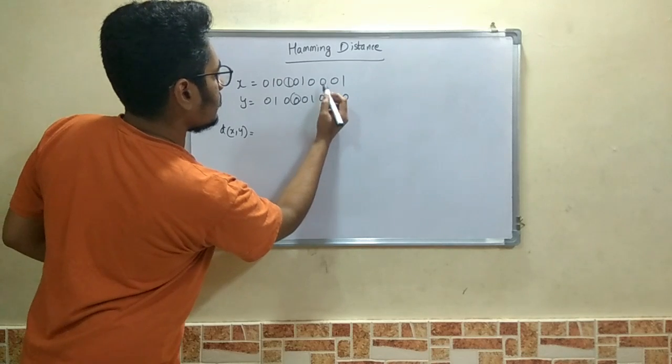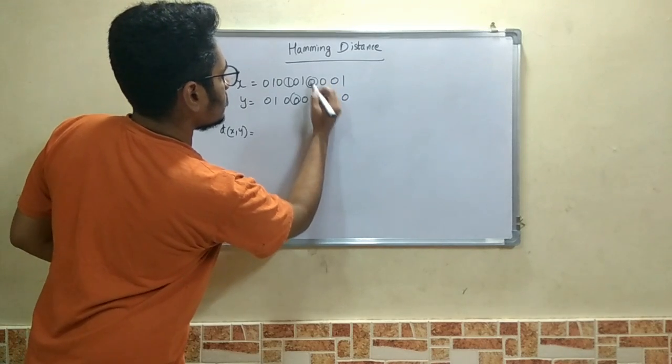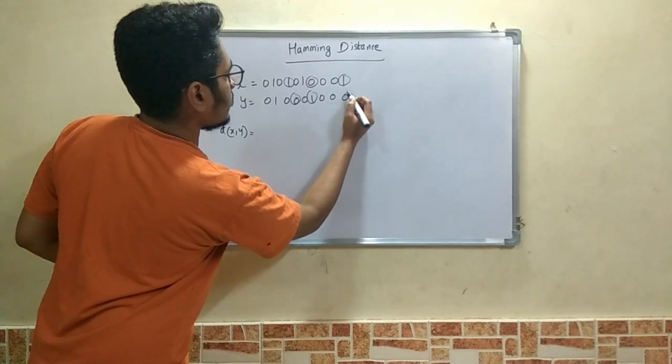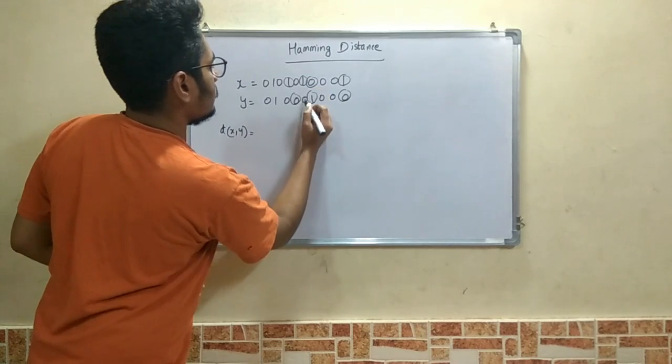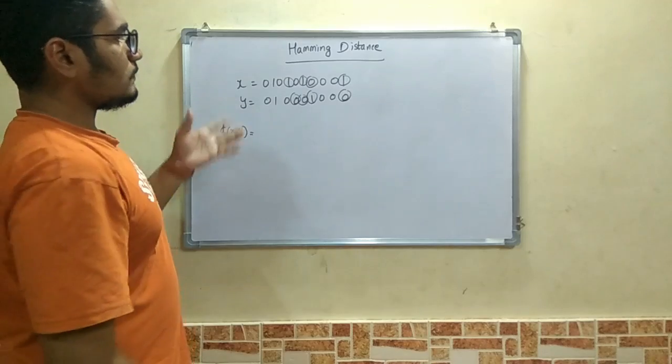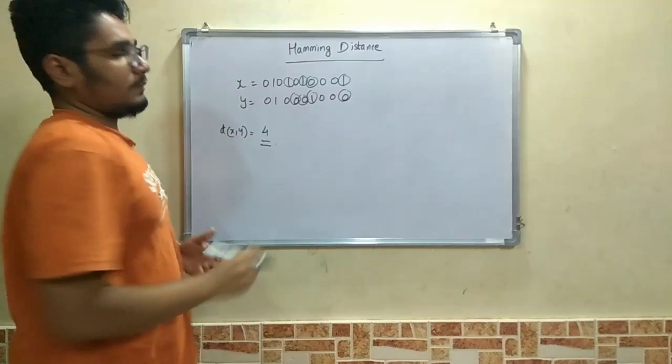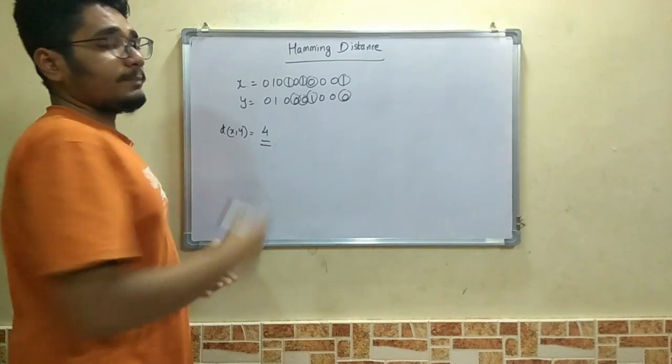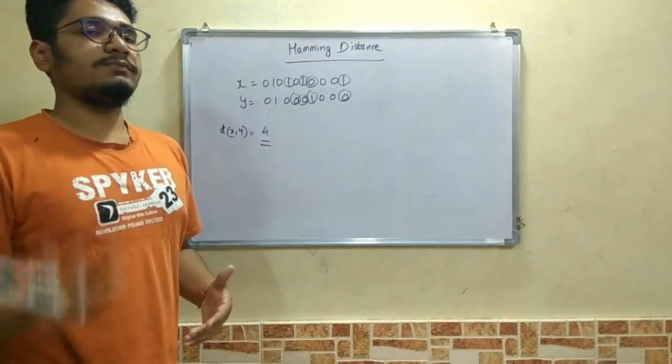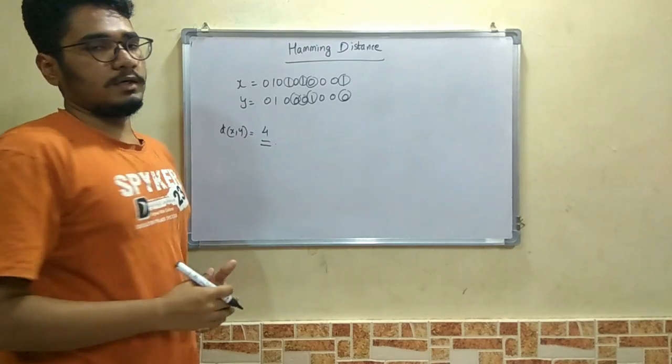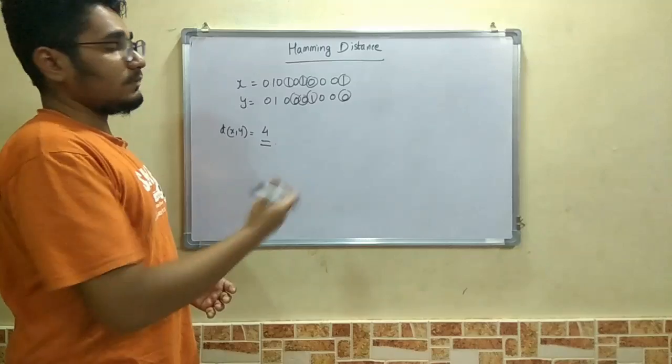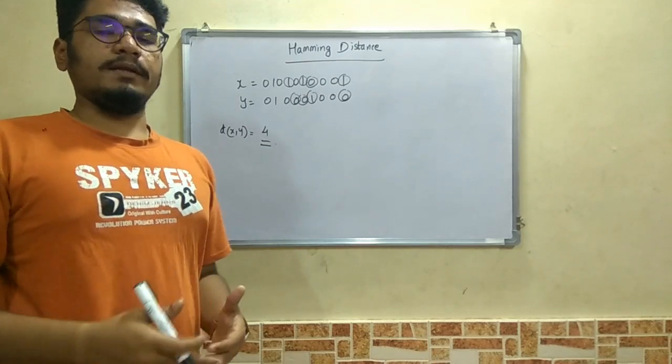This is same, this is same, this is same, and this is different, and this is different, and even this is different. So these bit positions - one, two, three, four bit positions - they are different. X and y are different by four different bit positions. So this is the Hamming distance in detail.